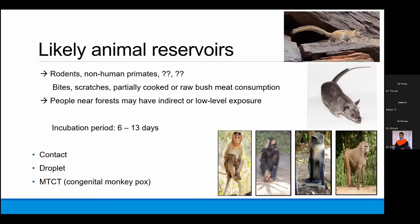You can acquire monkeypox from a wide variety of animals, and we are now also witnessing human-to-human transmission. Medical literature is aware of only half of all animal reservoirs. Rodents — both household and wild — non-human primates, apes, and monkeys can all serve as animal reservoirs. If you are bitten, scratched, or consume partially cooked or raw bush meat, these are well-known risk factors. Rural populations living near forests with low-level exposures are at higher risk than urban dwellers.